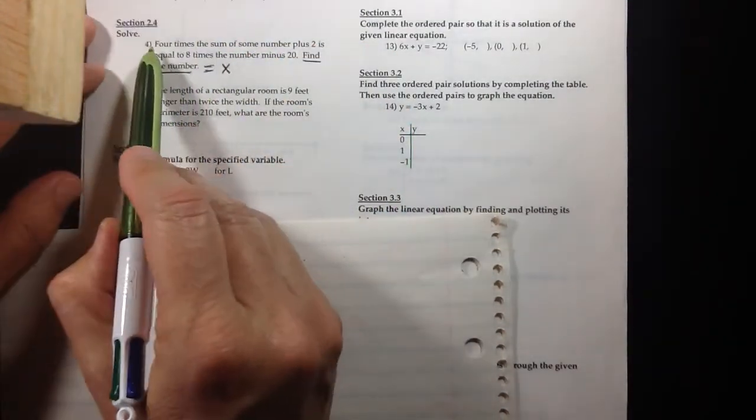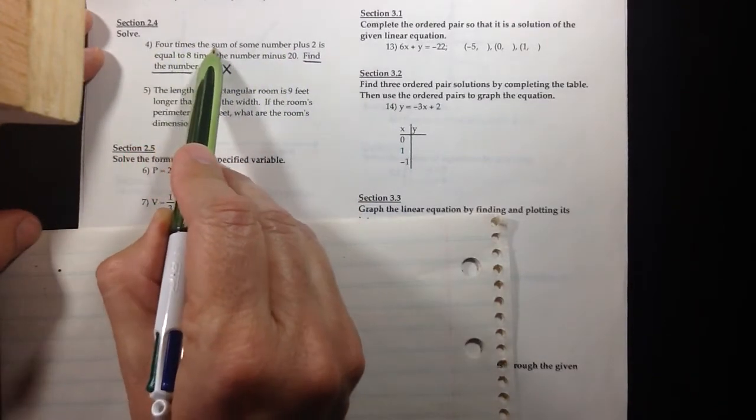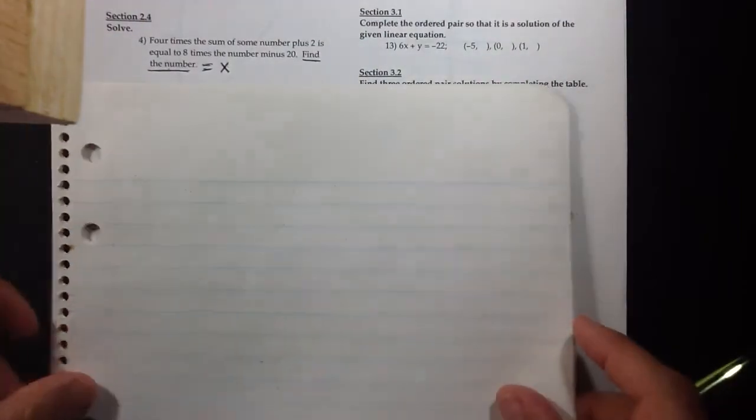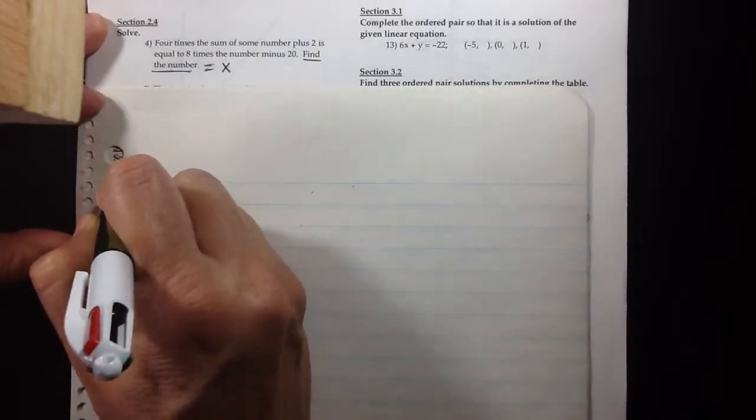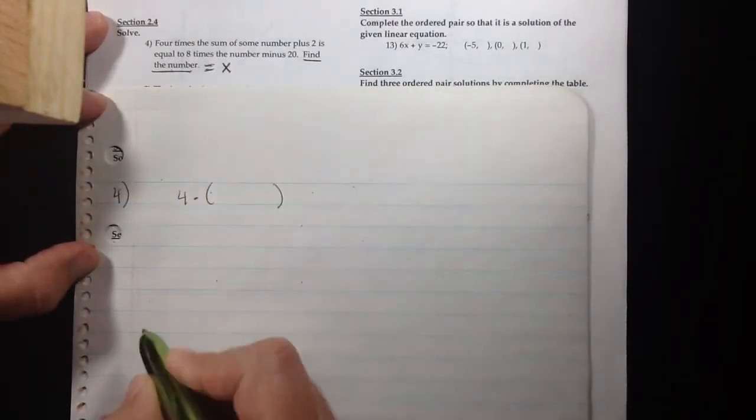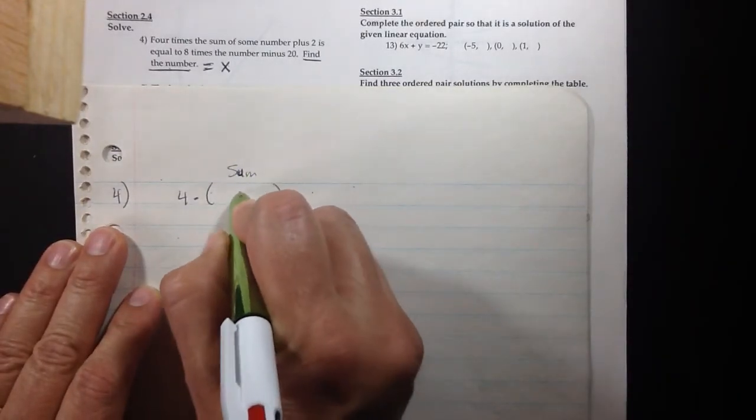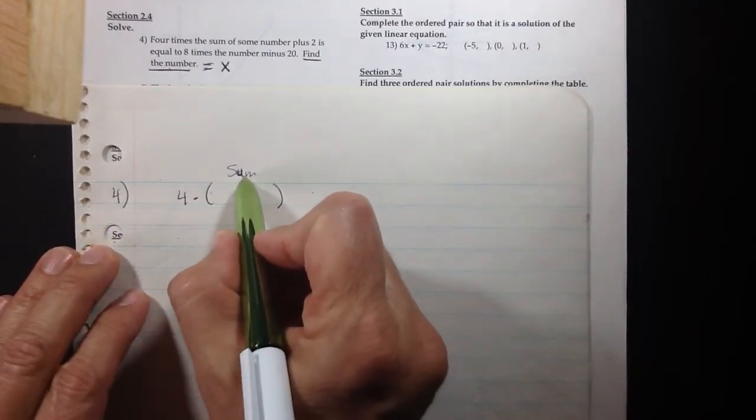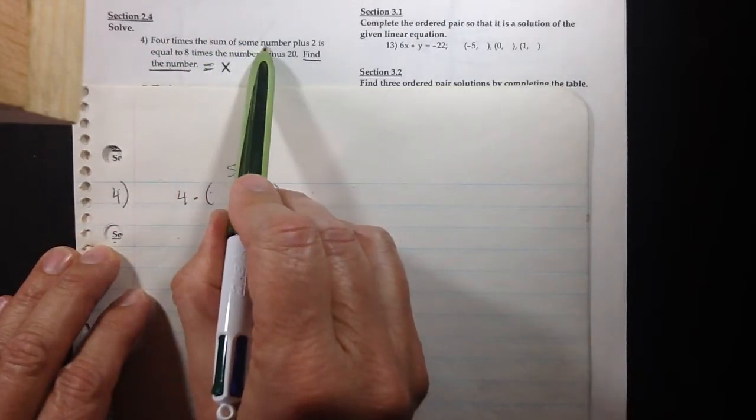So four times the sum, when we have four times a sum we're going to have four times something complicated. So a sum means that we are going to be adding two things, and so our anticipation is to know what and what are being added. Four times the sum of some number, well X is the placeholder for this missing number.